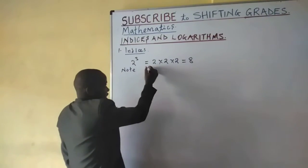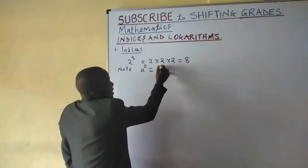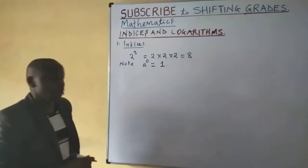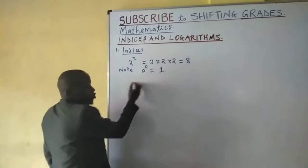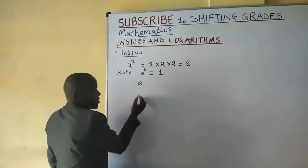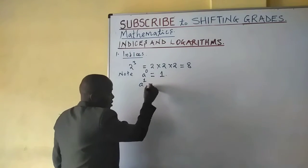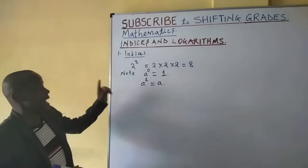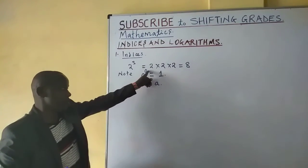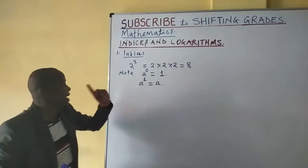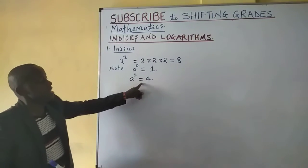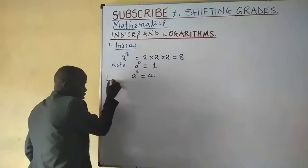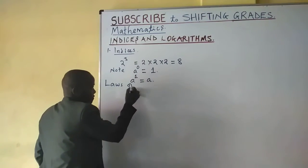When a number is raised to index 0, we get 1. It is also important to note that when you have a number and you raise it to power 1, you just get the number itself. A number raised to index 0 gives 1; a number raised to index 1 gives the number itself. I'll go straight to the laws of indices.